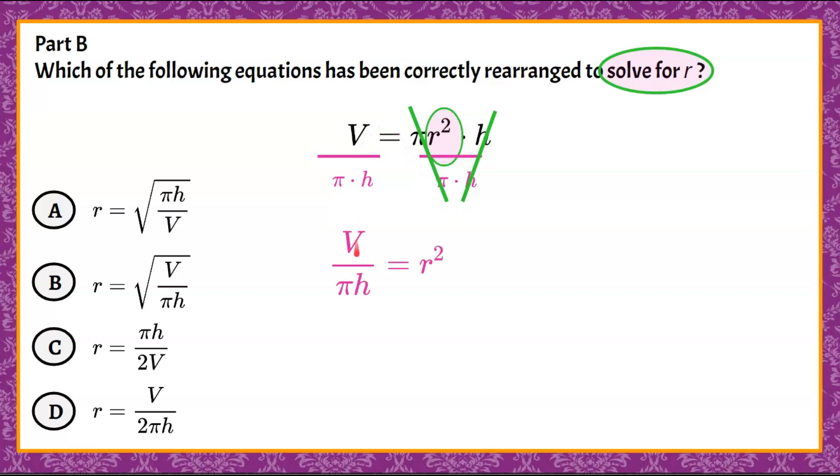So we don't want to know what r squared is equal to. We want to know what r is equal to. Well, the inverse of squaring is square root. So now I'm going to find the square root of each side. So we want to do the square root of r² and then the square root of volume all over π times h.